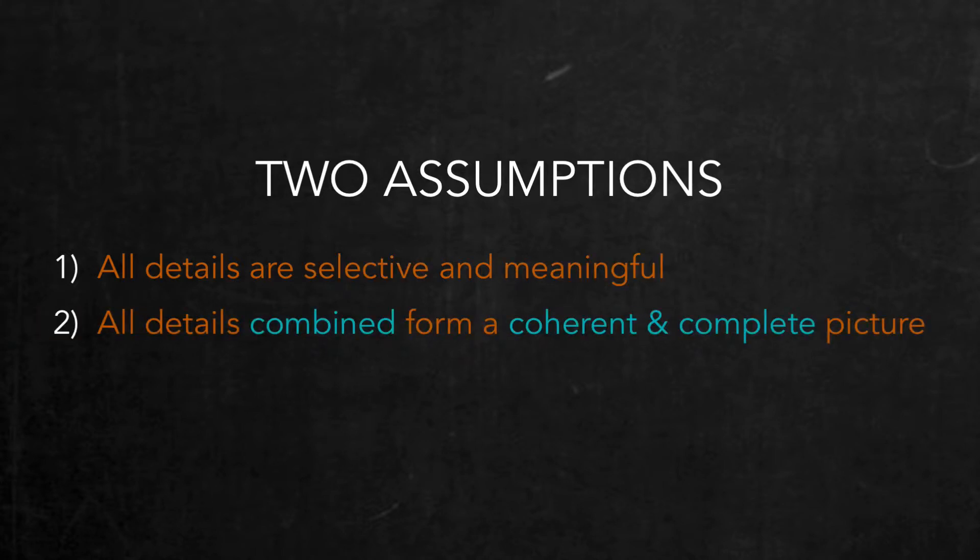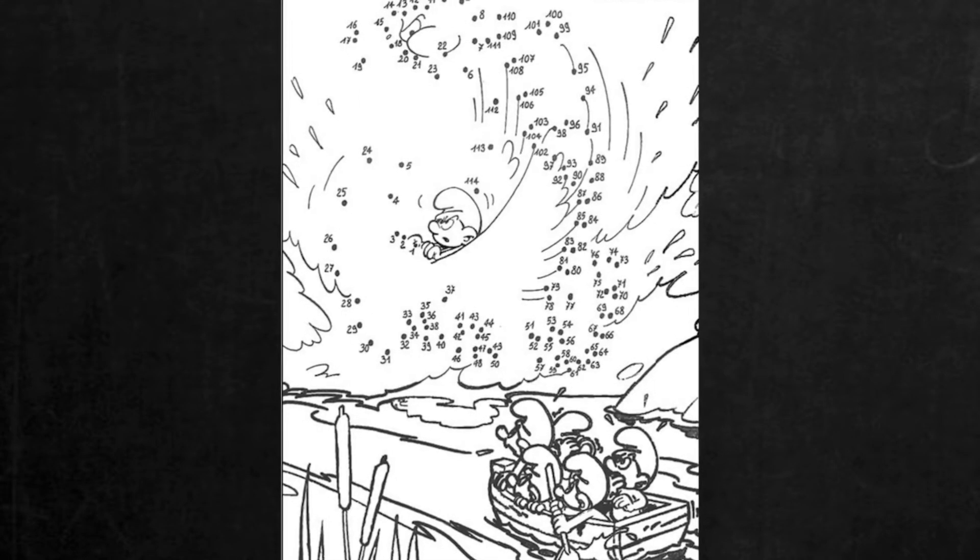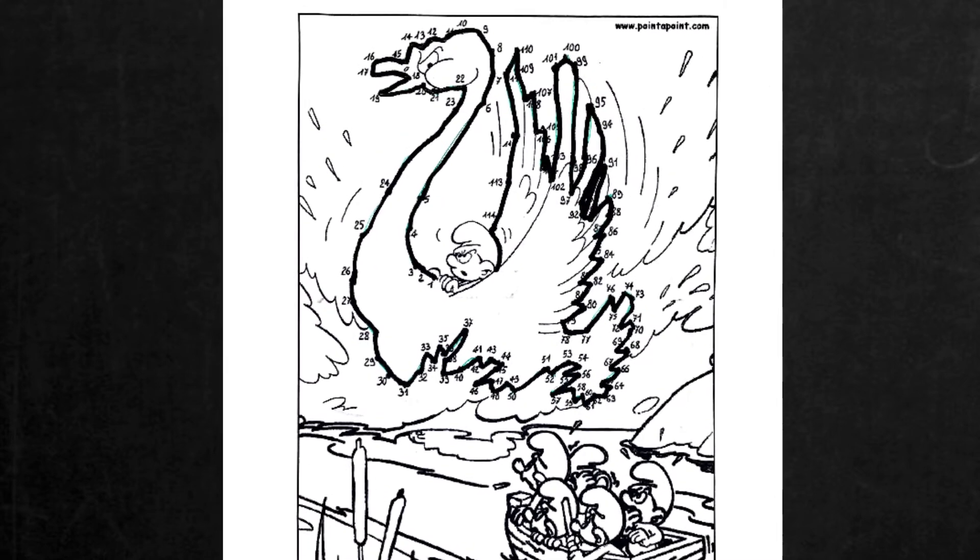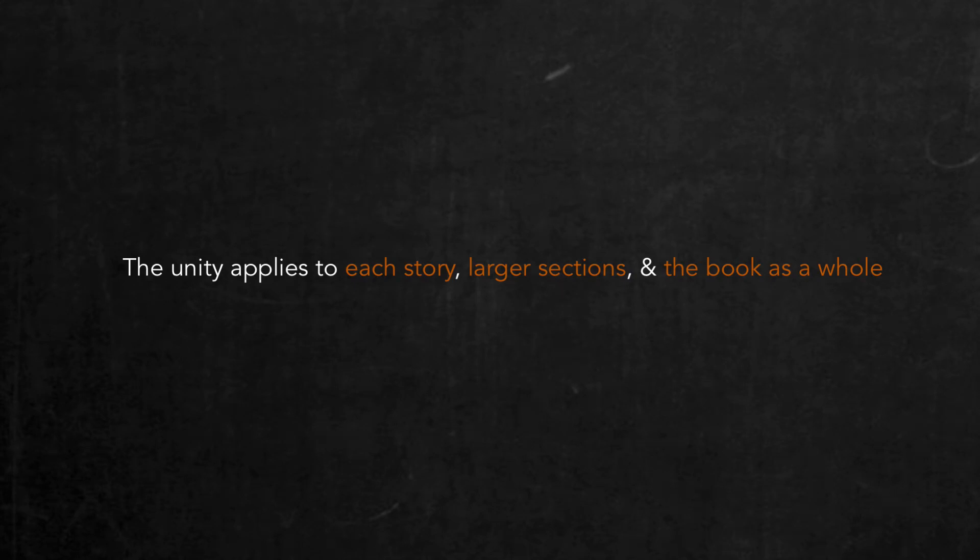The second assumption is that all details, when collected together, form a coherent and complete picture. However seemingly unrelated on the surface some details may appear to be, they function together to create a larger unity. Like the connect-the-dot pictures where a mass of dots seem chaotic until you connect them in their proper relationships to create a larger unified whole. This unity applies to each story as well as to each larger group of stories and ultimately to the whole gospel.